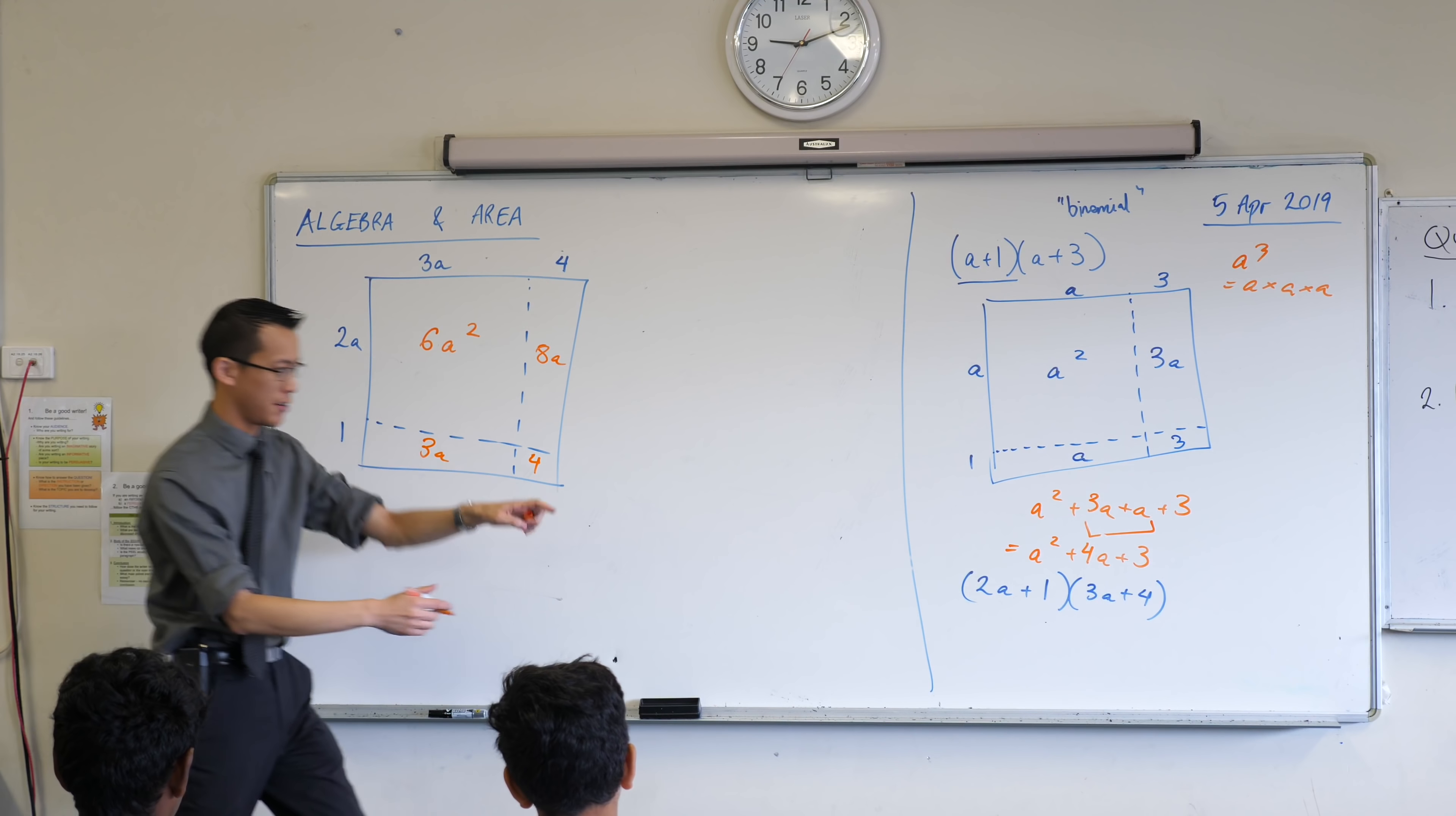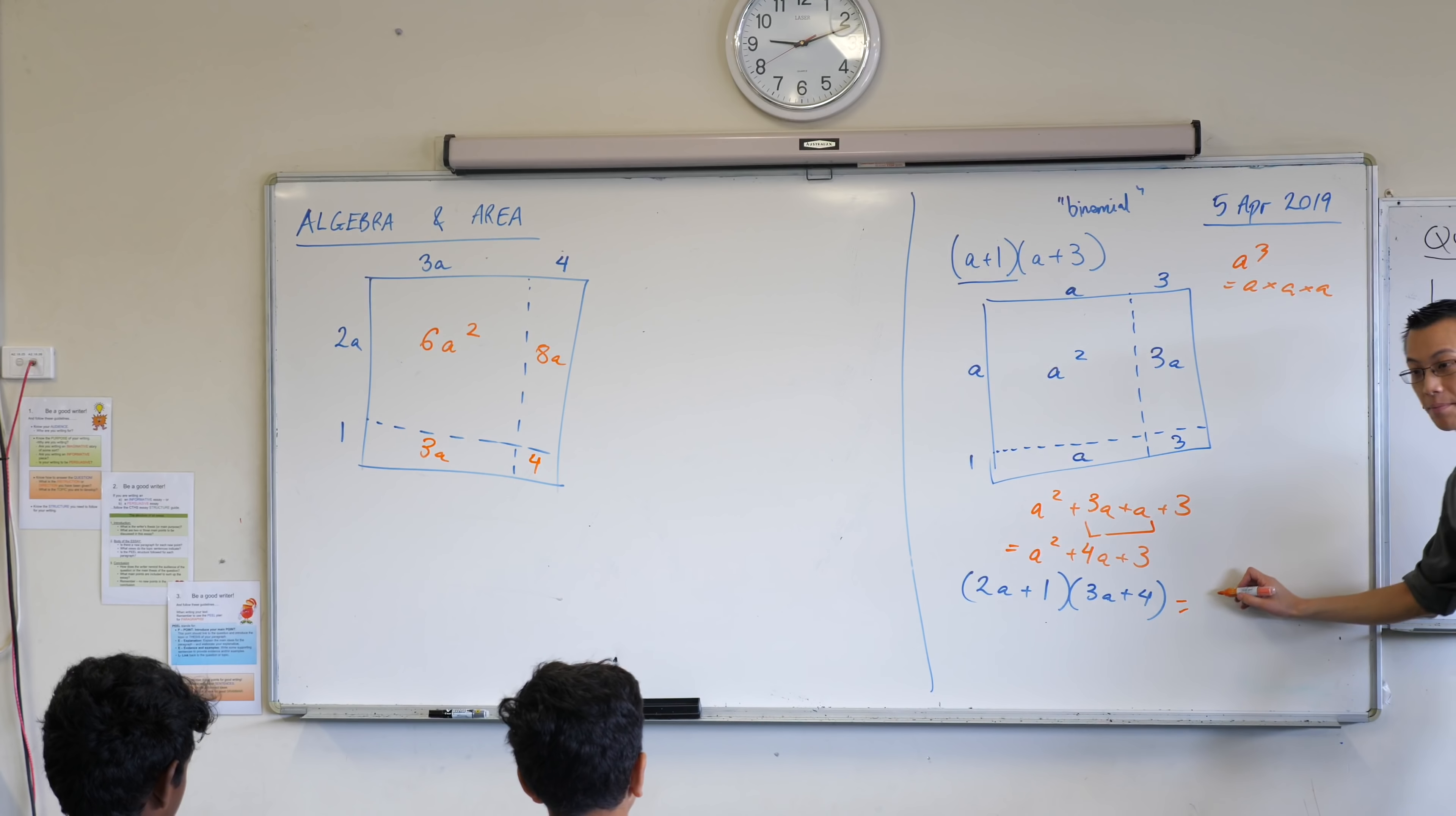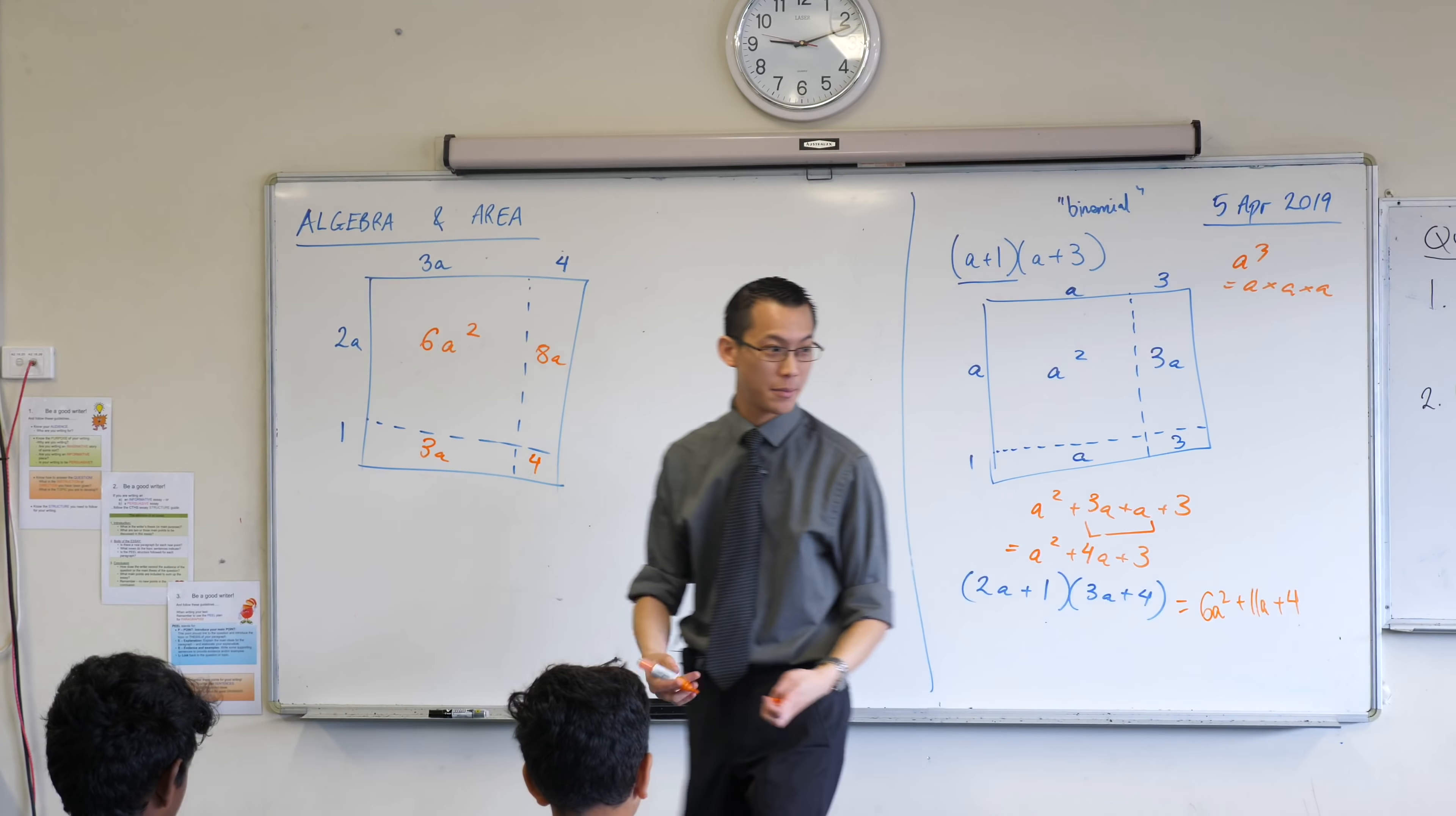So this is going to be equal, so I'm going to add them all together. Yeah, Krishan, do you have your question or a thought? I have the answer. Yeah, go ahead. 6a squared plus 11a plus 4. Nailed it. Happy times. We just added them all together.